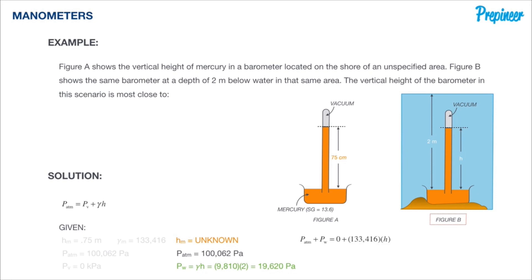Now looking at our general solution, we know that we have to start at the surface of the water, which is that atmospheric pressure. We need to go down a certain distance, two meters, and add that pressure that is developed by the water column, by the depth of the water. And that's going to equal the vapor pressure, which is still a vacuum, plus the specific weight of mercury times whatever height that is.